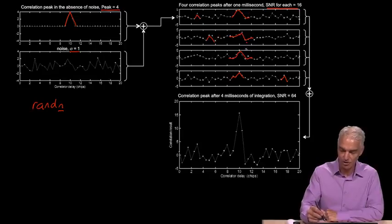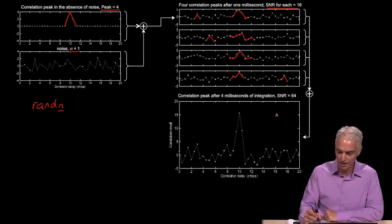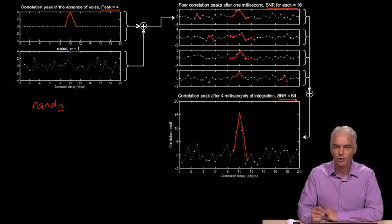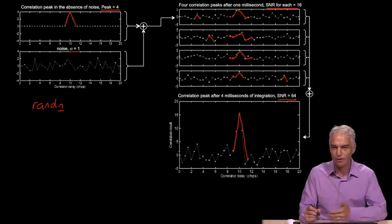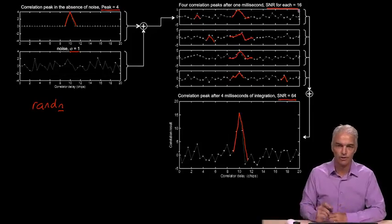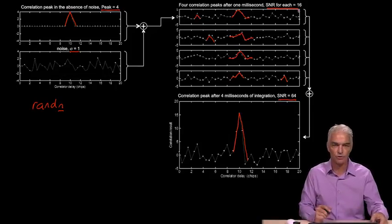We get this nice, strong peak. And if you actually use MATLAB and go and ask it, what is this peak value over the standard deviation of noise? The answer comes out 64, which is exactly what we expect from our result. We've added together four noise terms, so we expect four times the original SNR value, which is exactly what you get. That's all for today.